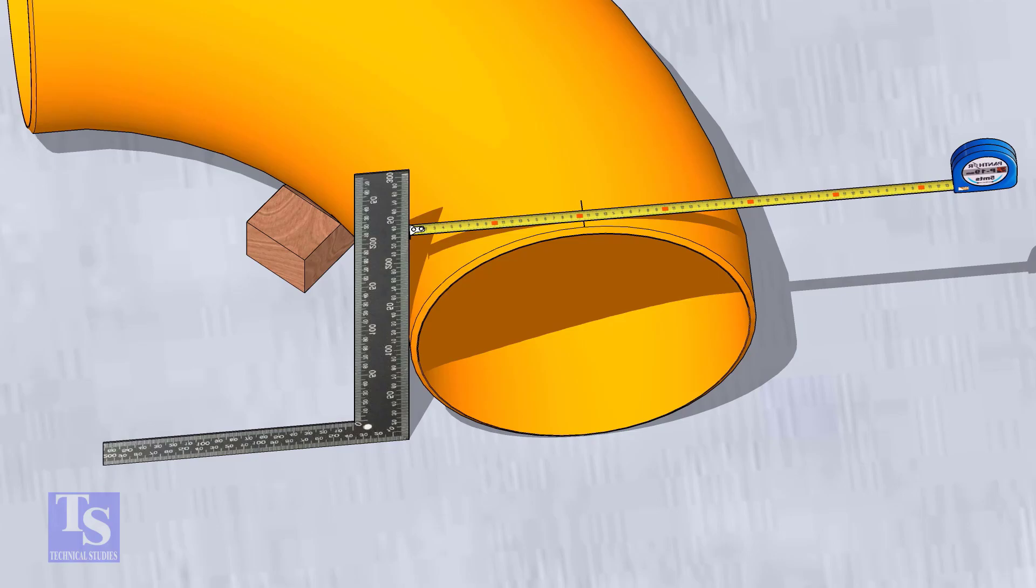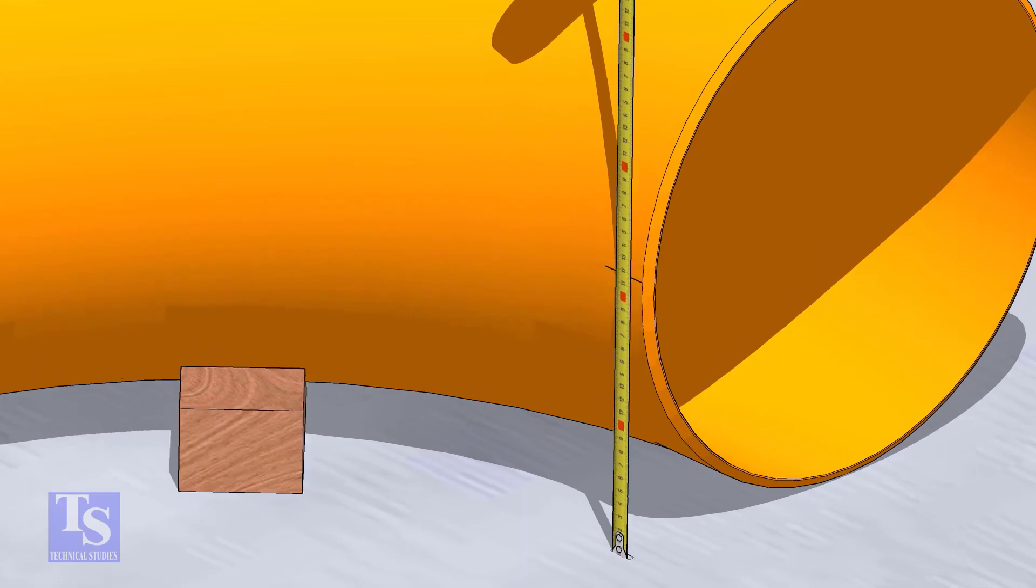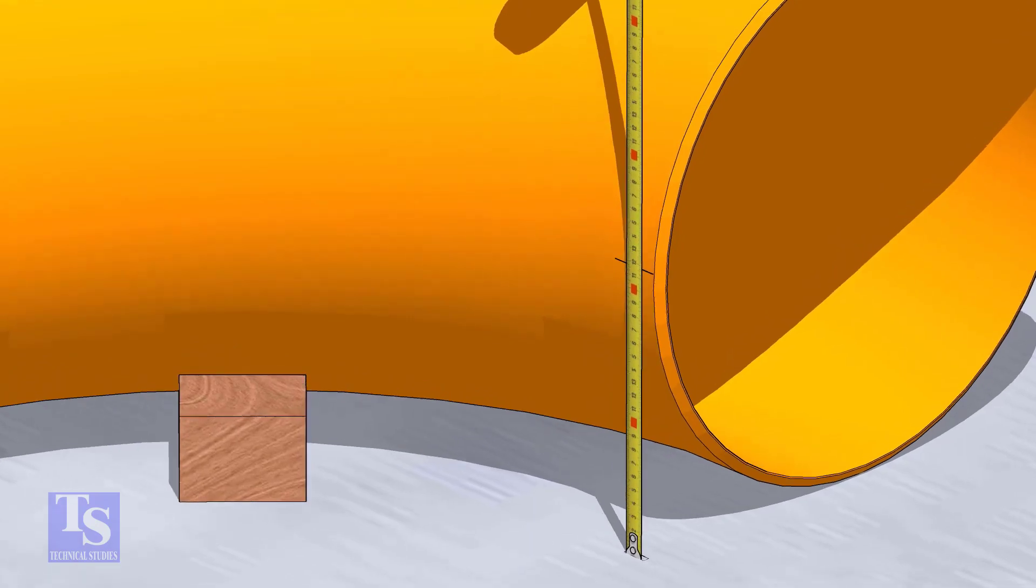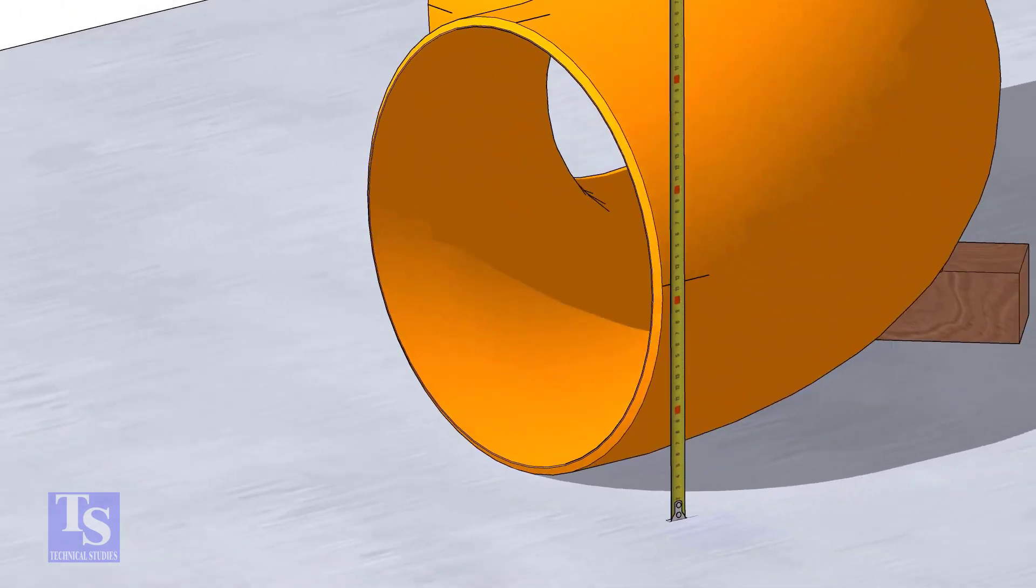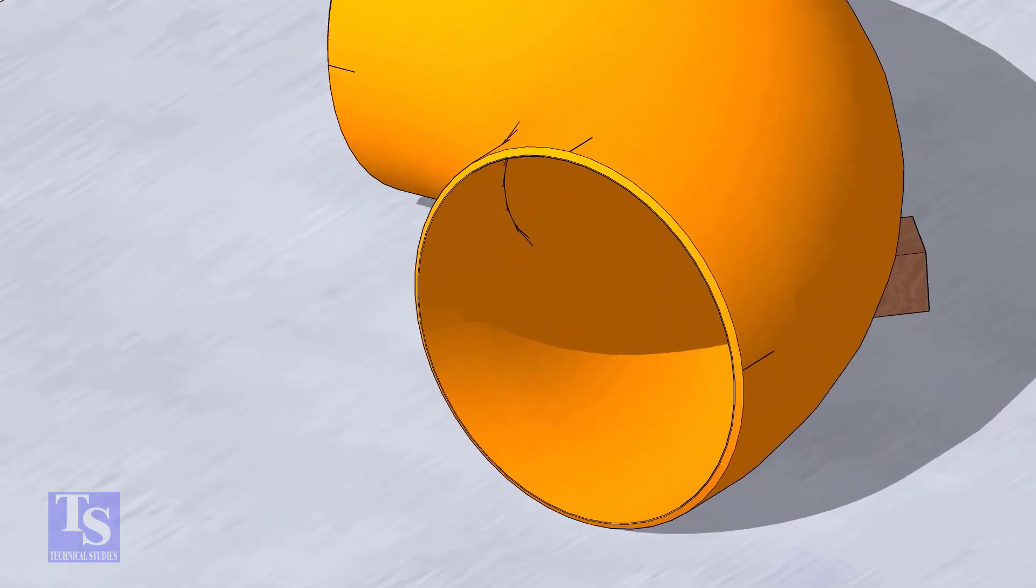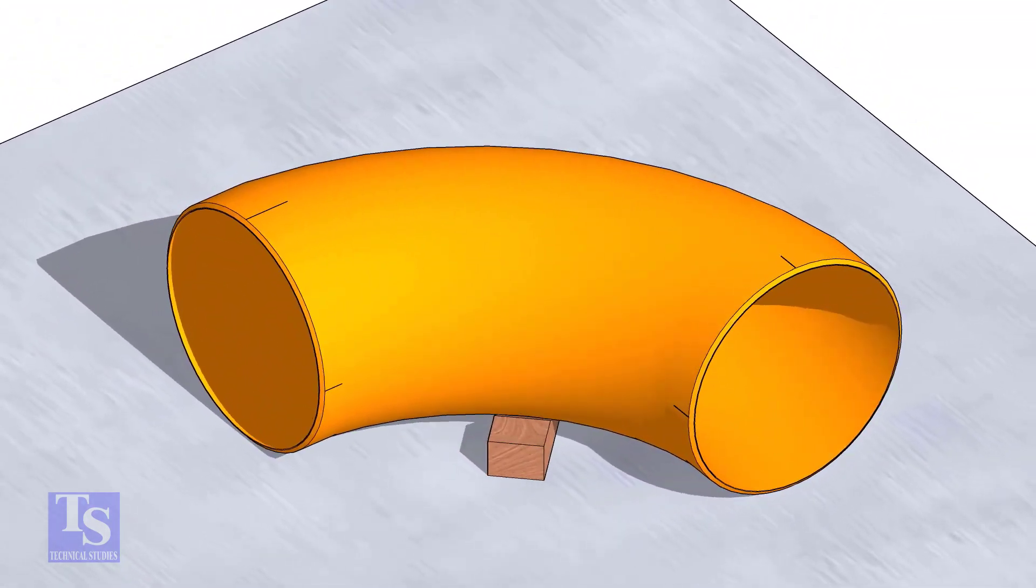Mark half diameter from the plate to the elbow on both sides as shown. Repeat the process and mark the quarters on the other end of the elbow. Rotate the elbow and mark the bottom side quarter also.